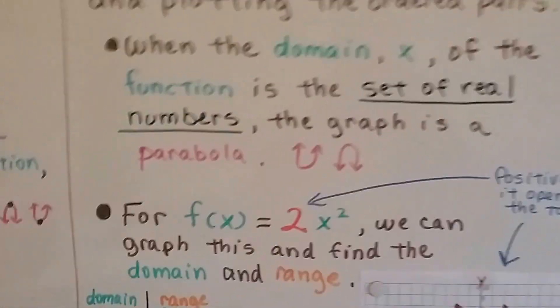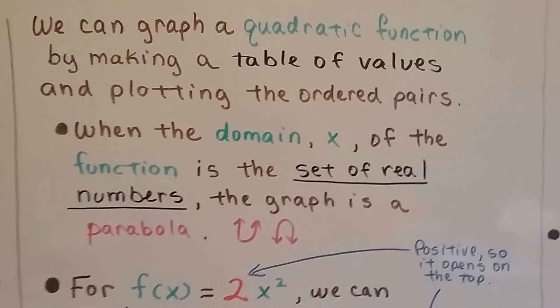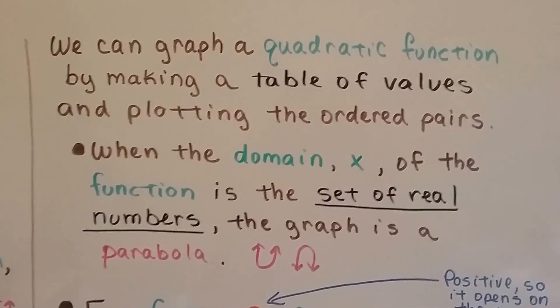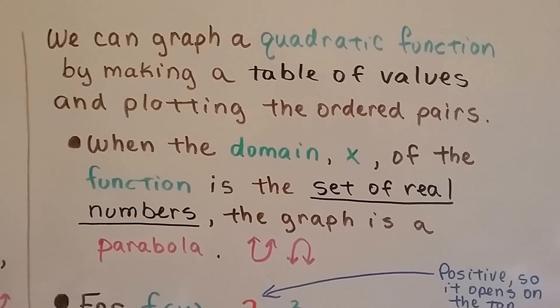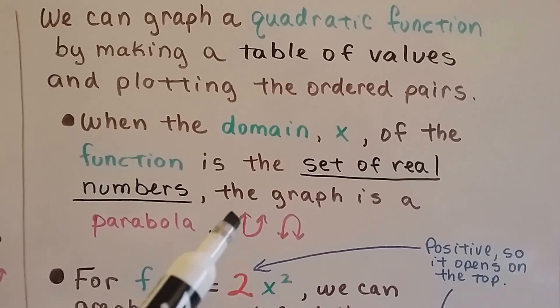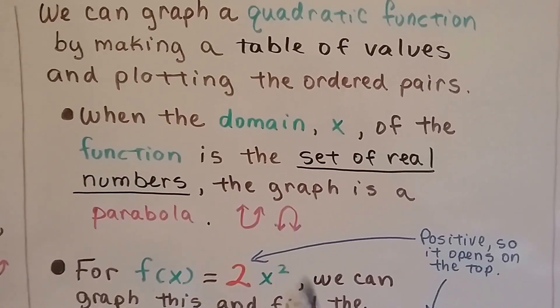So, we can graph a quadratic function by making a Table of Values and plotting the ordered pairs, just like we did with a linear function. When the domain x of the function is the set of real numbers, the graph is a parabola. It's u-shaped like this, facing either up or down.